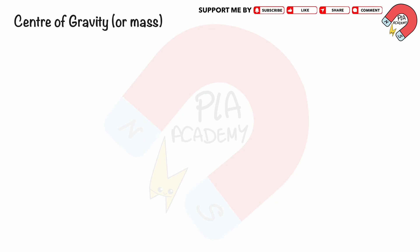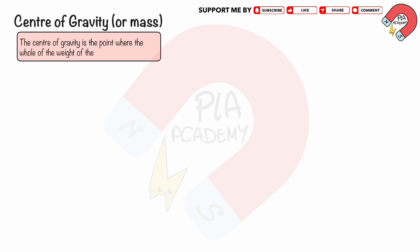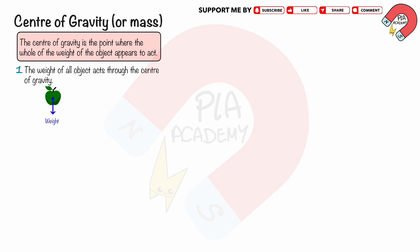Center of Gravity — sometimes it is also called the center of mass. The center of gravity of an object is the point where the whole of the weight of the object appears to act. The weight of all objects acts through the center of gravity. For example, the center of gravity of an apple, a magnet, and a person — their weight acts downward from these points.